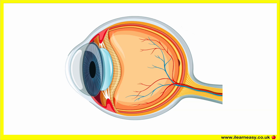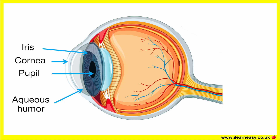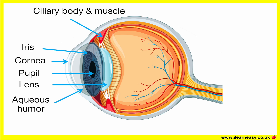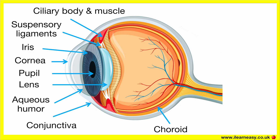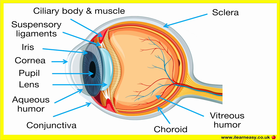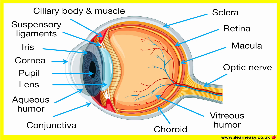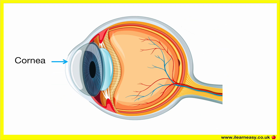Parts of the eye. There are different parts of the human eye, and each part has a specific function. The main parts include the cornea, aqueous humour, pupil, iris, lens, ciliary body, ciliary muscles, suspensory ligaments, conjunctiva, choroid, sclera, vitreous humour, retina, macula, and optic nerve.